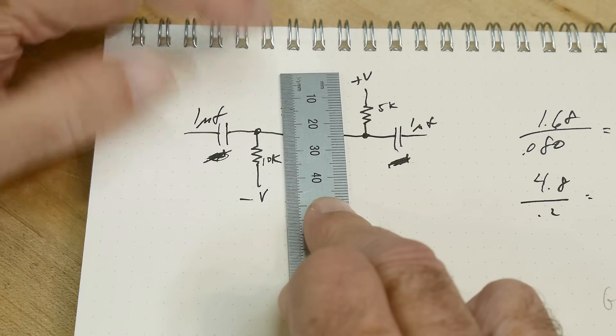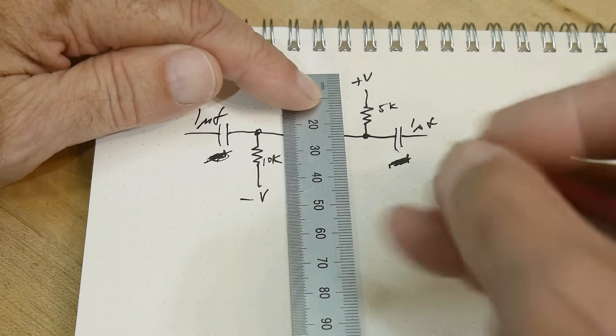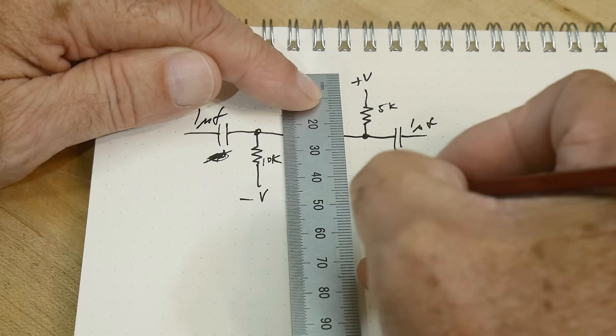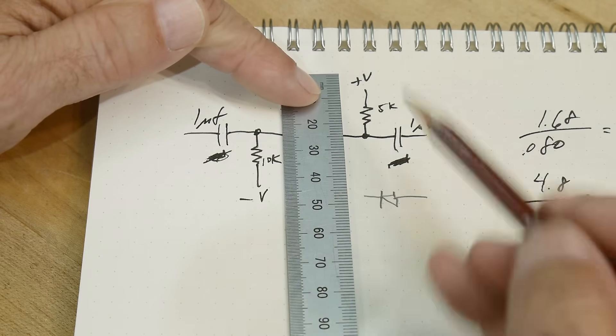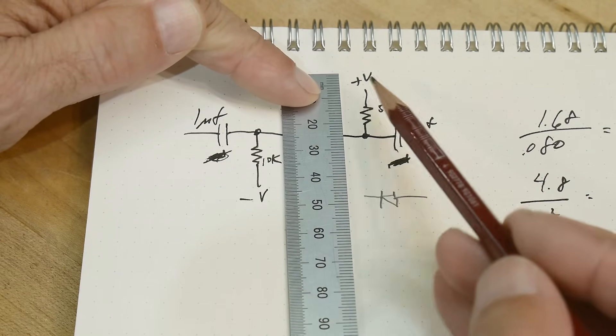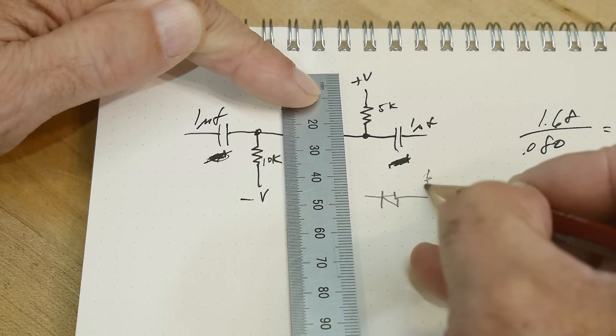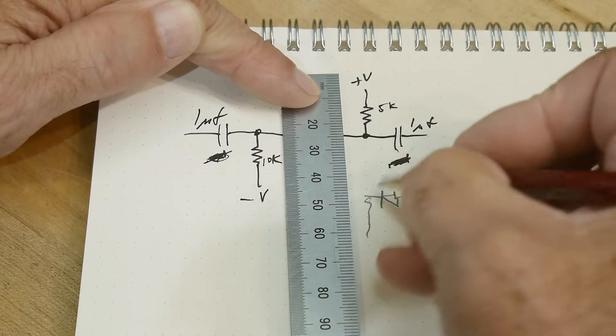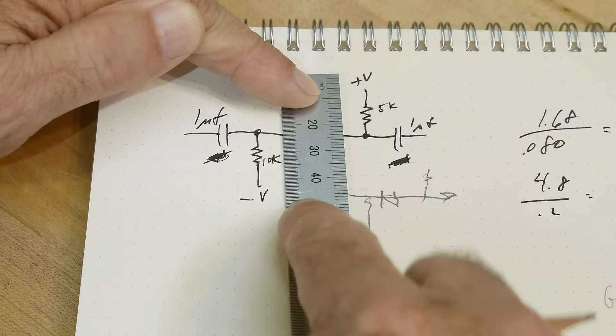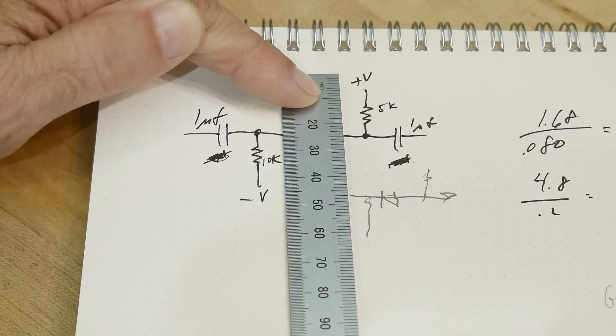A pin diode switch works this way, where you would have a diode in this direction. Because you have a plus voltage, the plus voltage goes through the diode and turns that diode on. Then you can have current go through that diode since it's conducting.